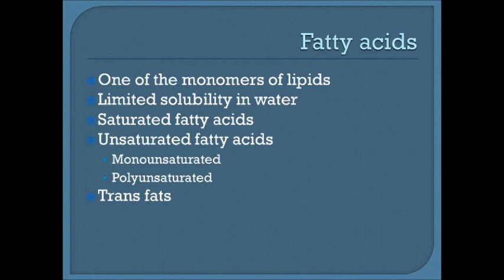Trans fats have a different structure than saturated fatty acids — they form linear chains. The double bonds in unsaturated fatty acids create a kink in the molecule so they cannot stack on top of each other in long parallel rows. If you eat a lot of trans fats, you're more likely to have issues with atherosclerosis and plaquing in arteries. The kink in unsaturated fatty acids makes it more difficult for them to stack up and occlude things.